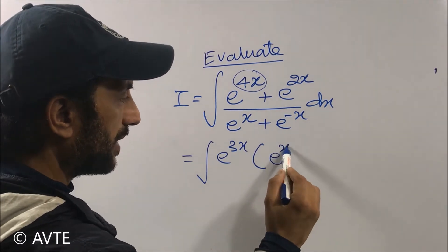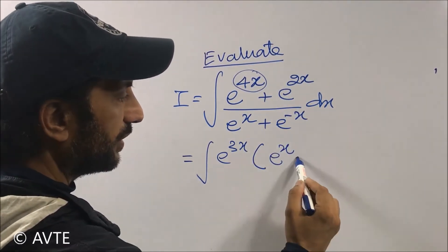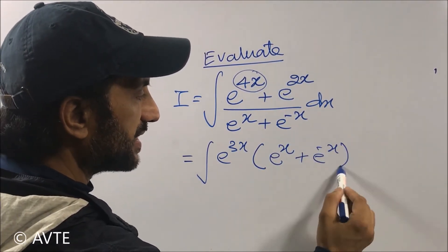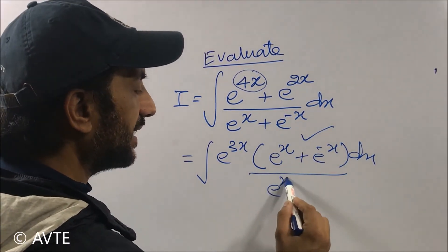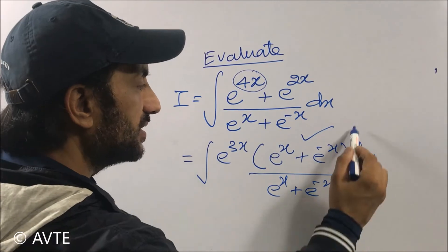So now the part of the numerator is exactly like the denominator, so this thing cancels off, and you are only left with integration of e^(3x) dx.